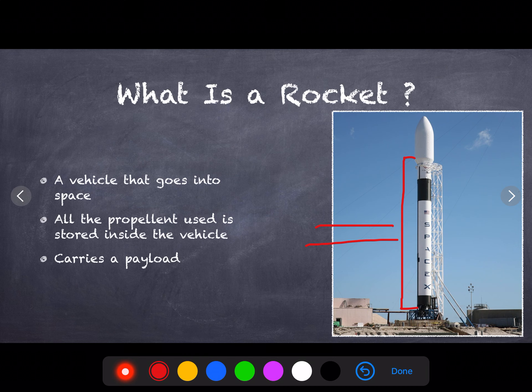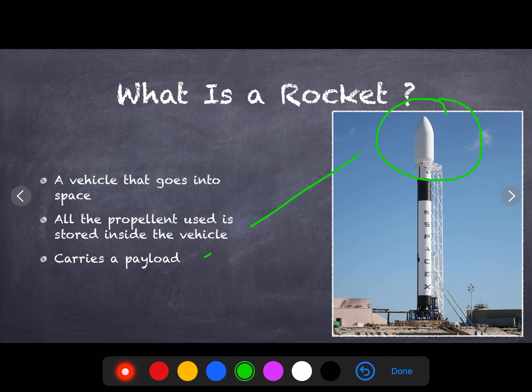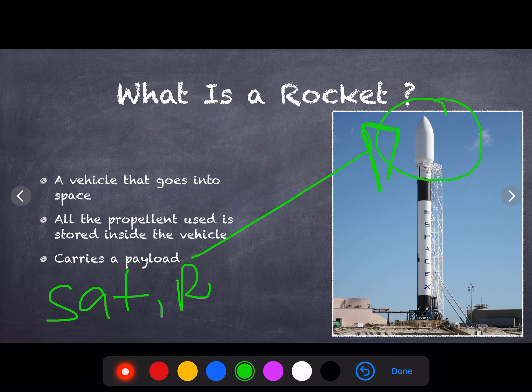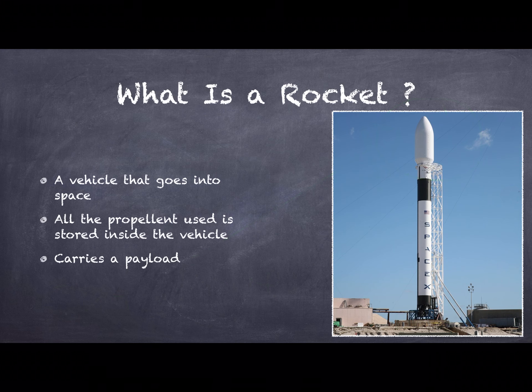But only this part at the top which I am marking with the green color is the payload. Payload is basically anything which is carried by the rocket. It can be a satellite, rover, orbiter, or lander - anything could be carried inside this payload section. So that was basically what a rocket is.